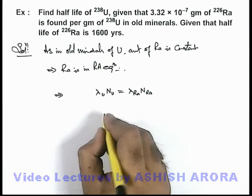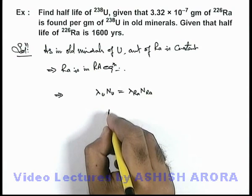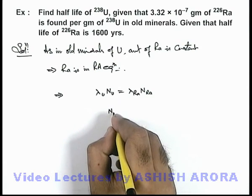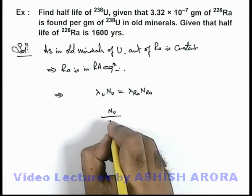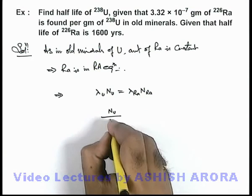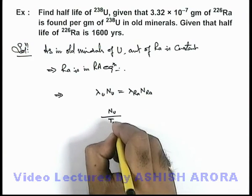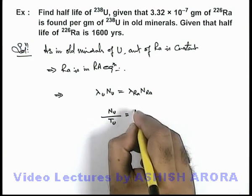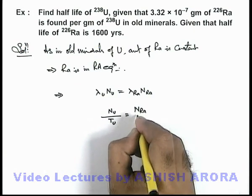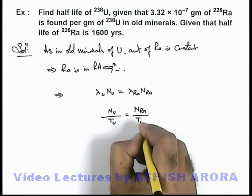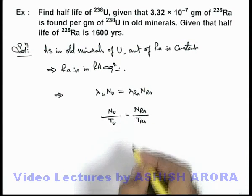So from here we can also relate: the number of atoms of uranium divided by the half-life of uranium must be equal to the number of radium nuclei divided by the half-life of radium nuclei.